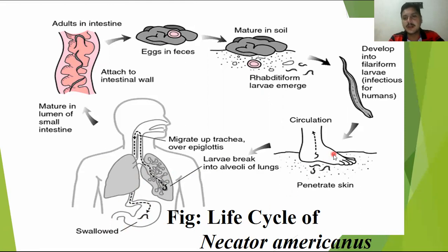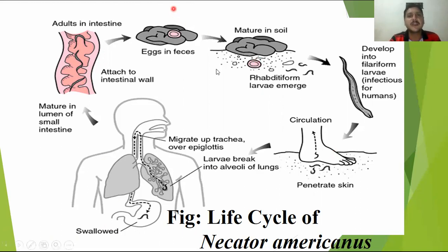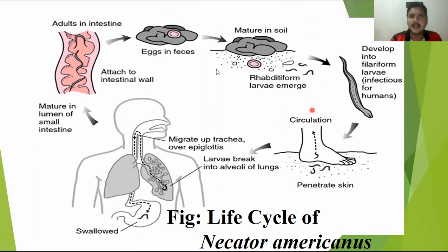This concludes our topic on Enterobius vermicularis and the other nematode parasites discussed today. Inshallah, in the next video we will be together for the second part, in which we will discuss Trichinella spiralis and Wuchereria species. Thank you. Assalamu alaikum.